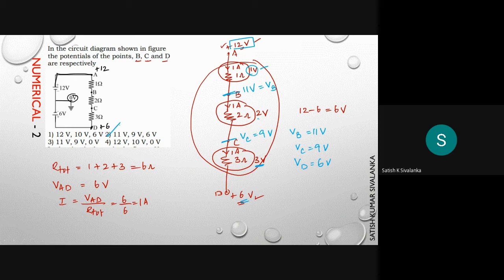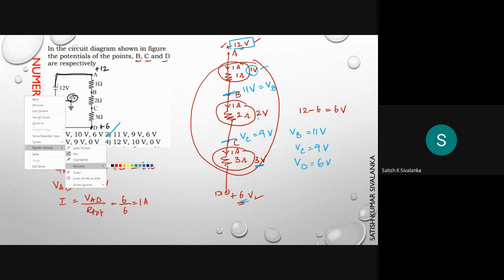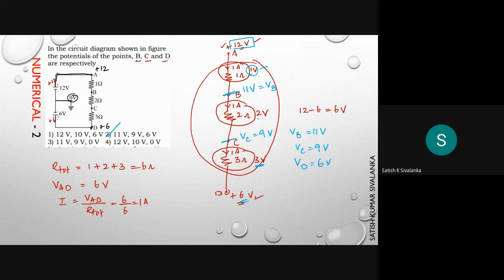Got the concept? Whenever such questions come, the simple idea is: first split the circuit. Imagine +12 V here and +6 V here, because these two terminals are connected together and connected to zero potential. The remaining 6 V is dropped across the series combination. I hope you have understood.